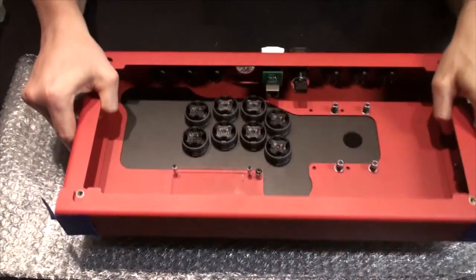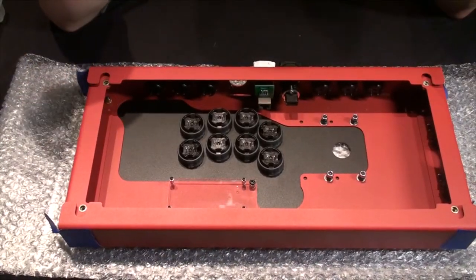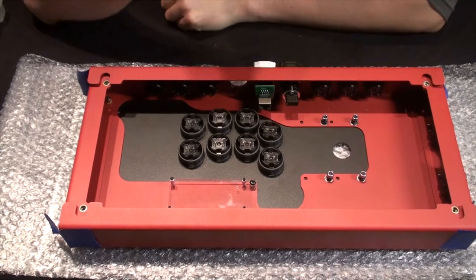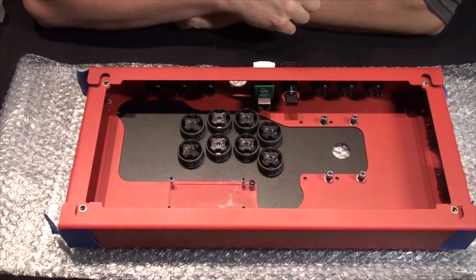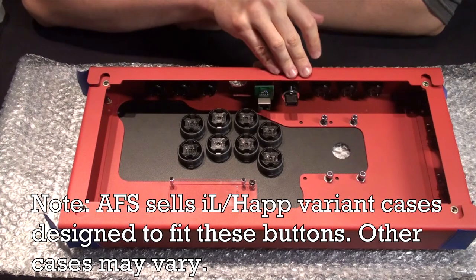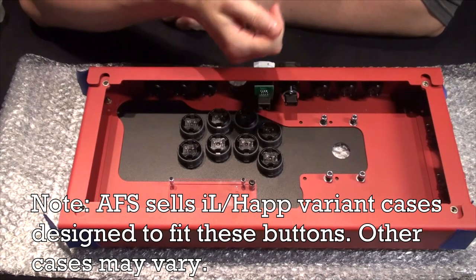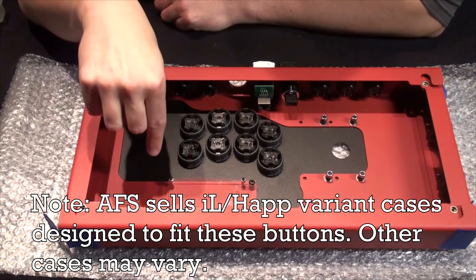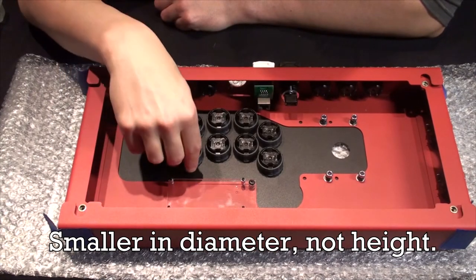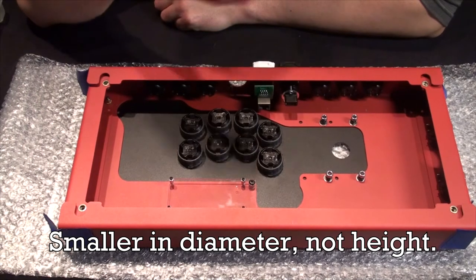So just a few points. Now you might have some FAQs or whatnot. First of all, can I use old school Happ style industrial Lorenze's buttons? And your answer is kind of. Those buttons are a little bit smaller, but they will fit these holes. I've tried it with the other stick.